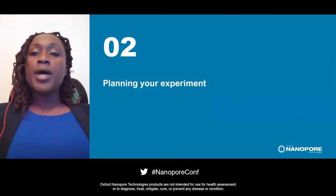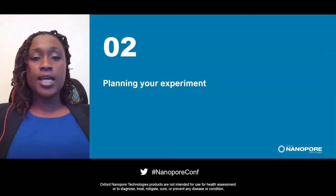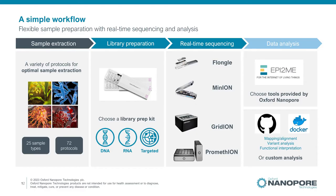Now let's switch gears and talk about how to plan your Nanopore sequencing experiments. At Oxford Nanopore, our sequencing workflow can be broken down into four consistent steps, and we have support and flexible options for each. We start with extracted DNA or RNA, and you'll find lots of guidance on how to extract high-quality nucleic acids in the second Masterclass of this series. These samples are then prepared for sequencing using a Nanopore sequencing kit during the library preparation stage, followed by real-time sequencing, and last, data analysis.